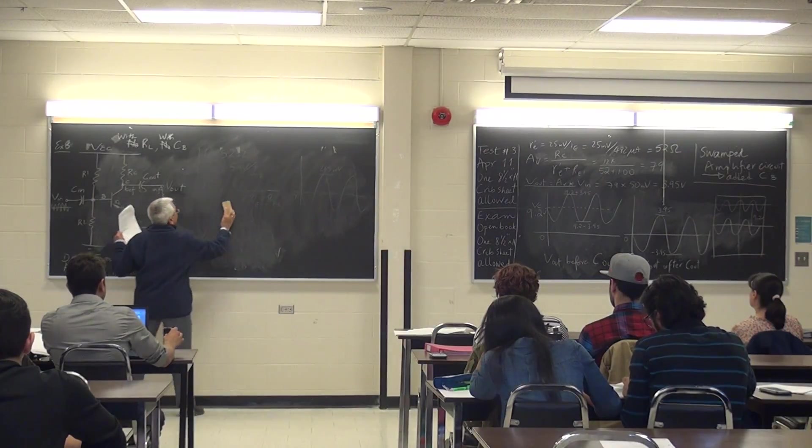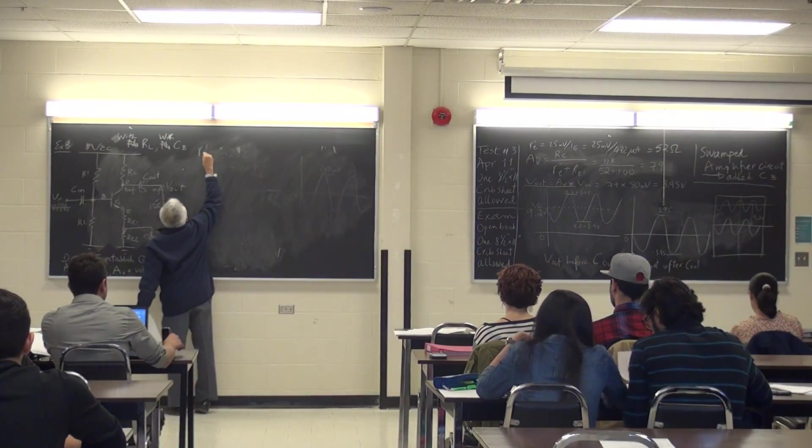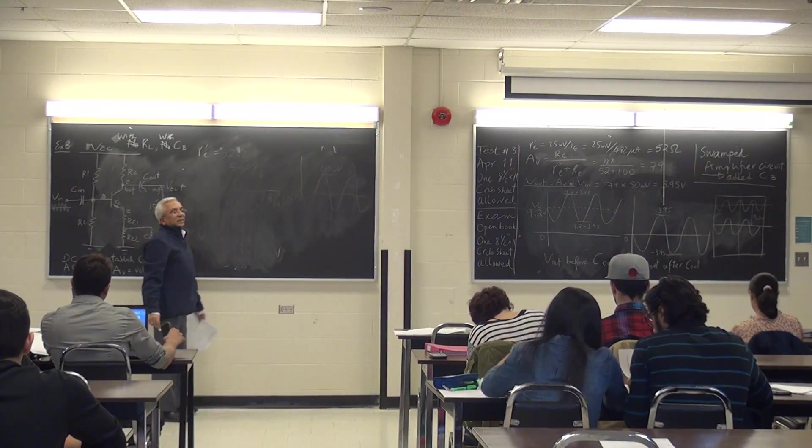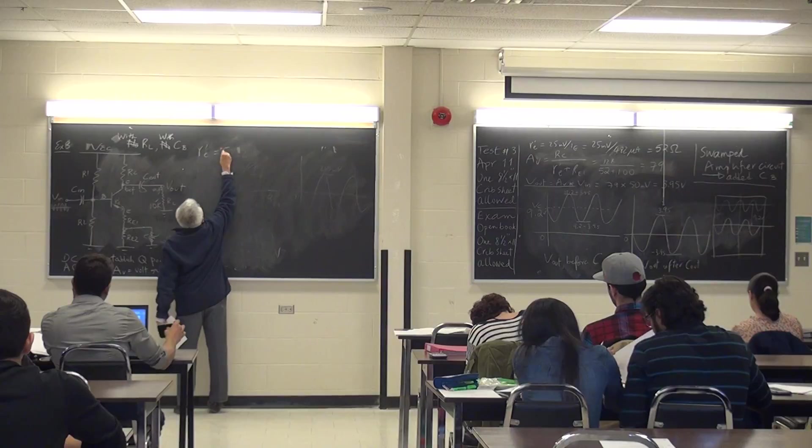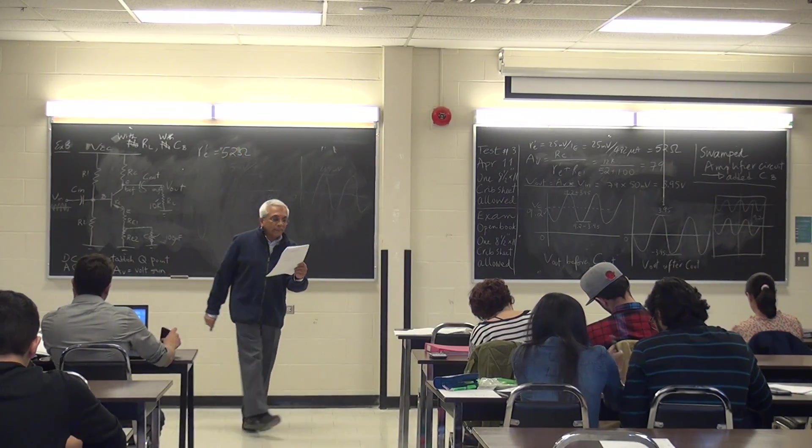First calculation shown there is for AC analysis, r'e. How much? 52. No change. Why no change? Because it is 25 millivolts, which is a constant.